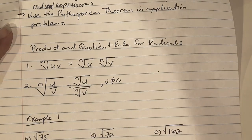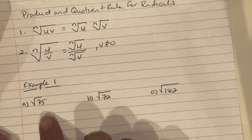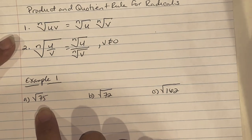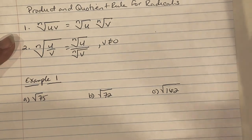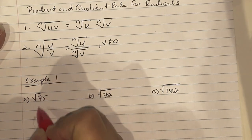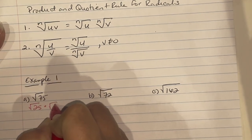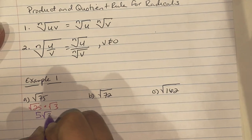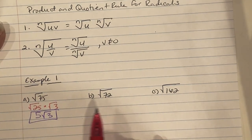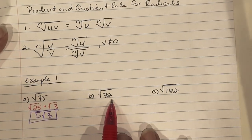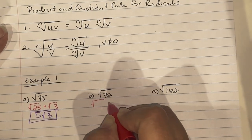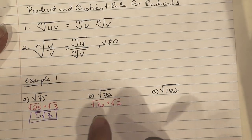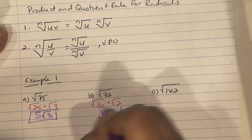In Example 1, we simplify √75, √72, and √162. For √75, think in terms of perfect square factors: rewrite as √25 · √3. We can take √25 = 5, so it becomes 5√3. For √72, it's an even number divisible by 2: 72 = 36 × 2, so √72 = 6√2.